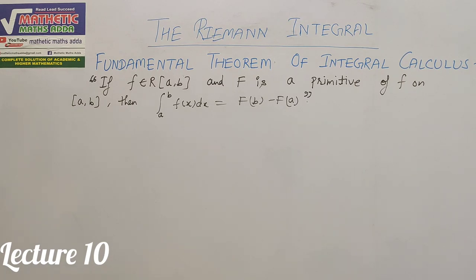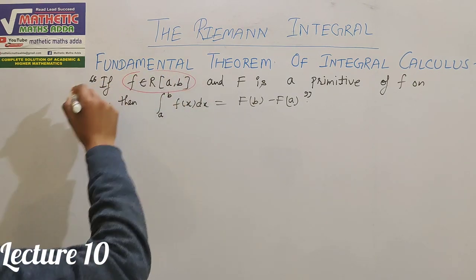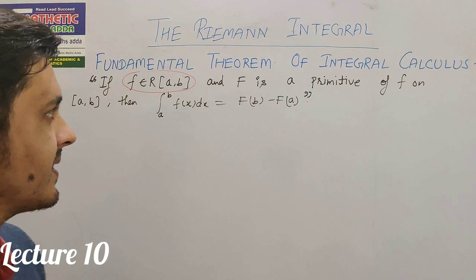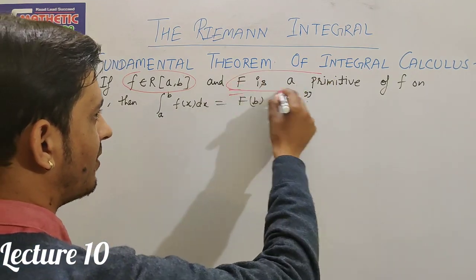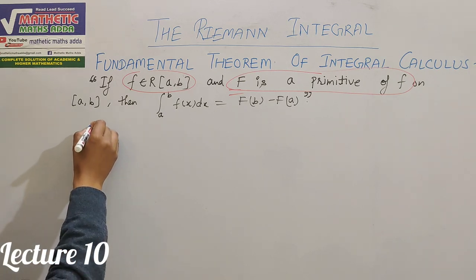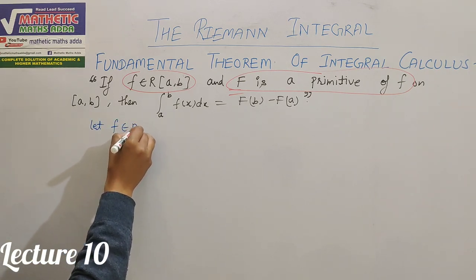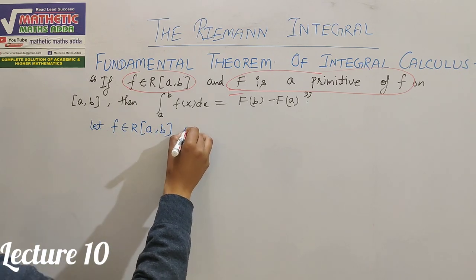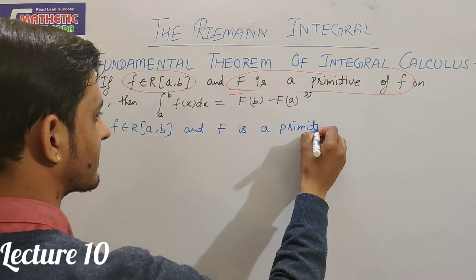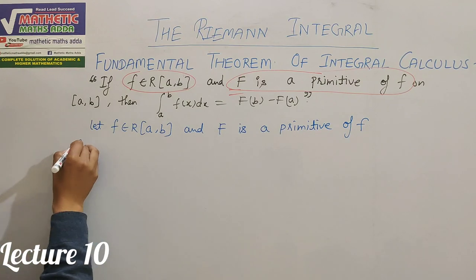In the statement, what is written? If f is Riemann-integrable on the closed interval [a, b] — meaning lower Riemann integration and upper Riemann integration are equal — and F is a primitive of small f on the closed interval [a, b].